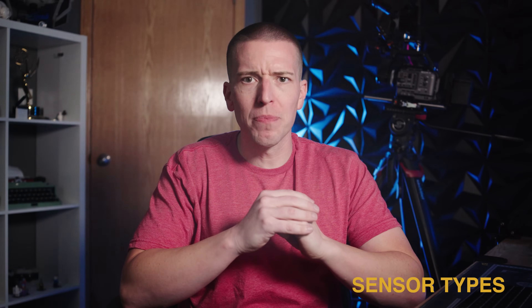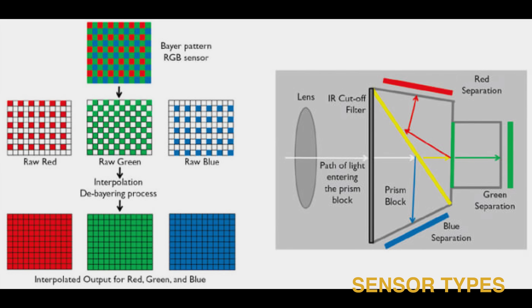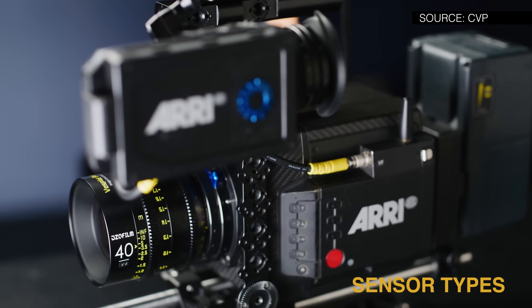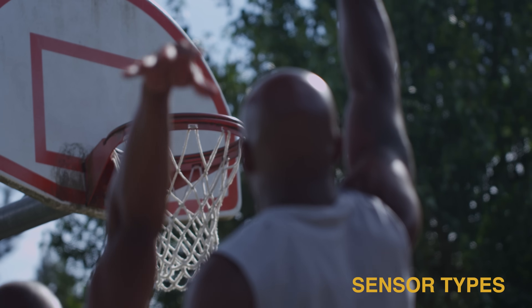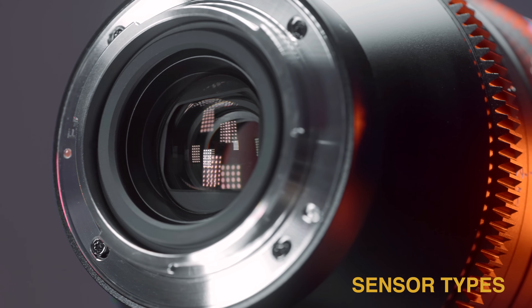In the early days of digital cinema, many cameras actually used three-chip sensors, splitting red, green, and blue across separate two-third-inch chips. Cameras like the Sony F900 and the Grass Valley Viper used this design. Today, cinema almost exclusively uses single-chip sensors with Bayer patterns. That shift opened the door to large formats, reduced depth of field, and full use of the 35mm lens ecosystem.